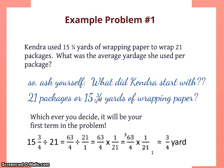You want to ask yourself: what did Kendra start with? Did she start with 21 packages or did she start with 15 and 3 quarters yards of wrapping paper? In this problem maybe that's not the best question because you're thinking well she started with both things. So then you have to think a little beyond that. What's being divided up? She's got this big long roll of wrapping paper that she's gonna cut into 21 pieces for these 21 packages.